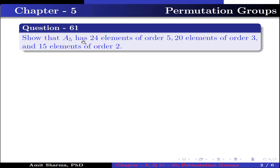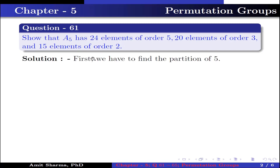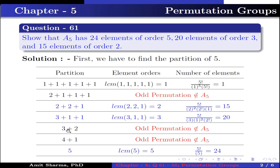Question number 61: show that A5 has 24 elements of order 5, 20 elements of order 3, and 15 elements of order 2. For this, first we have to find the partition of 5. The following table shows the partition of 5 — element, order, and number of elements. The partition 2+2+1, whose LCM is 2, gives elements of order 2. The number of elements of order 2 is 5! divided by 2² because the 2-cycle is presented 2 times, into 2! and 1, because the 1-cycle is presented 1 time. This equals 15, so the number of elements of order 2 is 15.